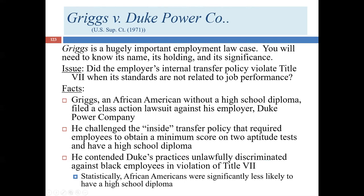When analyzing cases, we look at four important categories: the issue, the holding (the court's answer to the issue), the facts, and procedural history. With a broad ruling, we may not care as much about the specific facts. So what is the issue in Griggs?